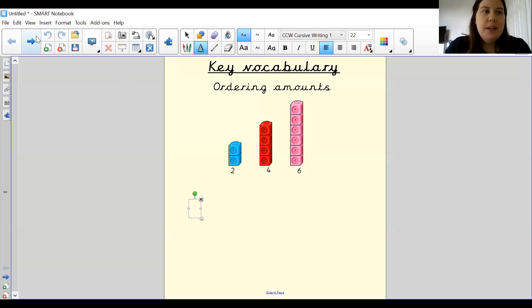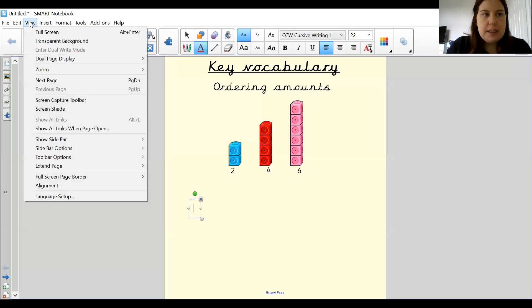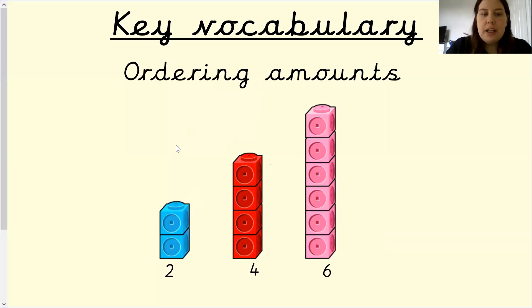So by looking at the screen you can see when we order amounts we either go from the smallest amount to the greatest amount or we go from the greatest amount to the smallest. And as you can see they are not in order. Two, four, six. We've missed in between because we don't have a group of objects of that amount.